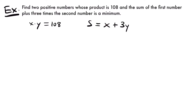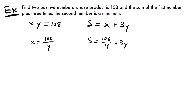We're going to use our secondary equation — the constraint — which has our fixed value of 108. We know that the two numbers multiplied together is 108, and that can't change. We'll use this constraint to get our primary equation in terms of one variable. I'm going to choose to solve for x, so x equals 108 divided by y. Then we substitute that into our sum equation: S equals 108 divided by y plus 3y. Now we have the primary equation in one variable, which we can take the derivative of. Let's rewrite it as S equals 108 times y to the negative first power plus 3y so we can apply the power rule.